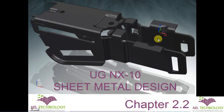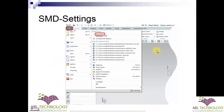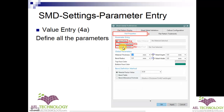Welcome to a new session of UG NX10 sheet metal design. We are in chapter 2.2 and in this chapter we are going to deal with how to do preference settings for sheet metal. When you open a new file, click on File, then under Preferences click on Sheet Metal, and you will get this dialog box where you can edit the settings.